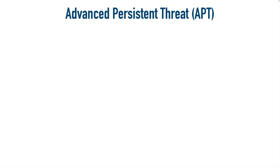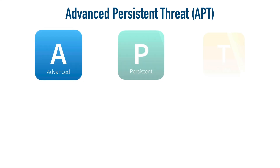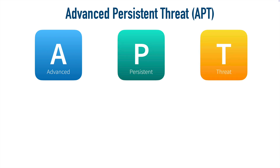In this video, we're going to learn about one of the most sophisticated threats in the cybersecurity landscape, an Advanced Persistent Threat, or an APT. Let's break down what APT means. A, or Advanced, means that the attacker is going to be using very sophisticated attack techniques.